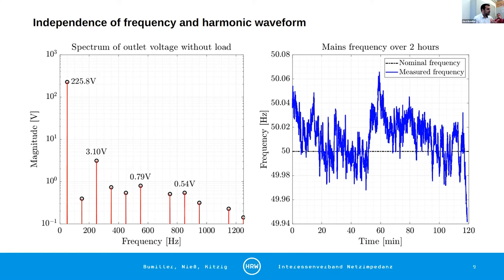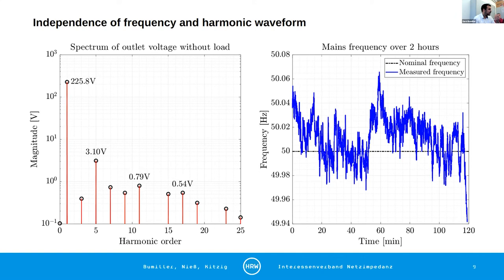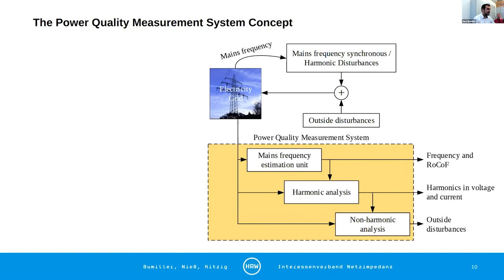It's important now for us, if we talk about harmonics and harmonic composition of signals, they will stay constant in waveform for different mains frequency values. So we do now talk about the harmonic order, as you all know. This is important because our power quality measurement system concept is modeled to estimate that the grid voltage that we measure is a superposition of mains frequency synchronous or harmonic disturbances, which are, for example, caused by non-linear loads, and we have outside disturbances. This could, for example, be switching power supply switching frequencies or inverter switching frequencies.